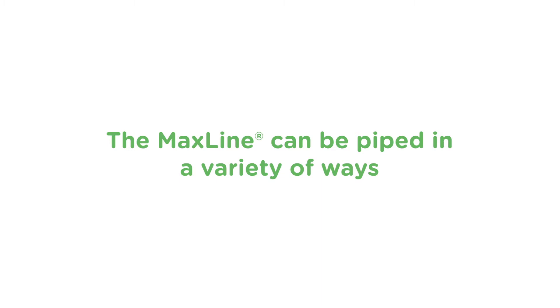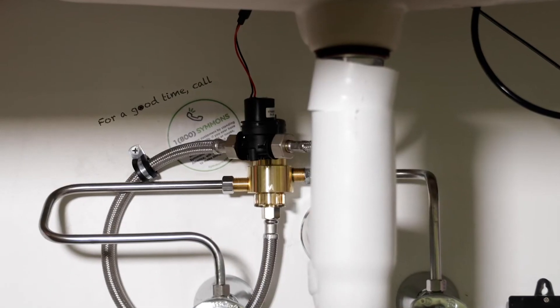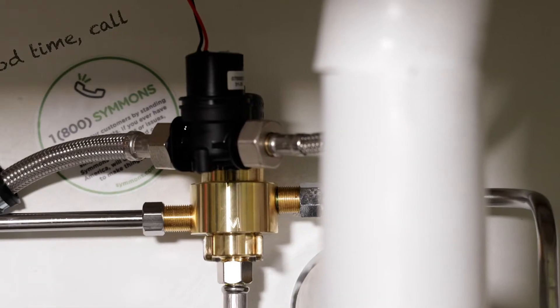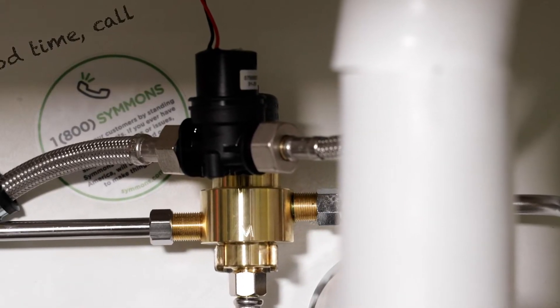The MaxLine can be piped in a variety of ways depending on the fixture it is feeding. For our example, the MaxLine is supplying tempered water to a sensor faucet that only has a single supply, so our piping is easy.